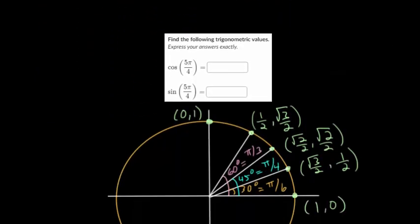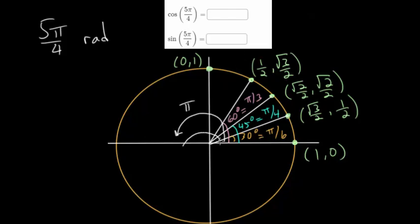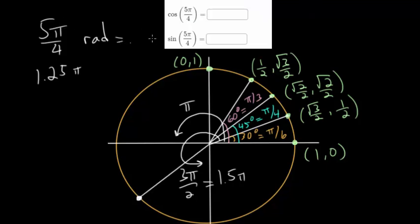Now let's move on to a second problem, except now the angle is given in radians. We need to figure out where 5π/4 radians is on the circle. We know that halfway around is π radians, and three-quarters around is 3π/2 radians. Since 3π/2 is 1.5π and 5π/4 is 1.25π, this angle falls exactly between halfway and three-quarters around. It's a multiple of π/4 — specifically 5 times π/4 — so it has the same features as the 45-degree or π/4 angle.